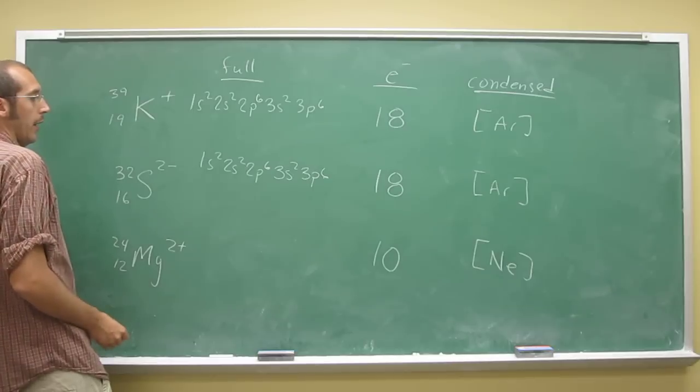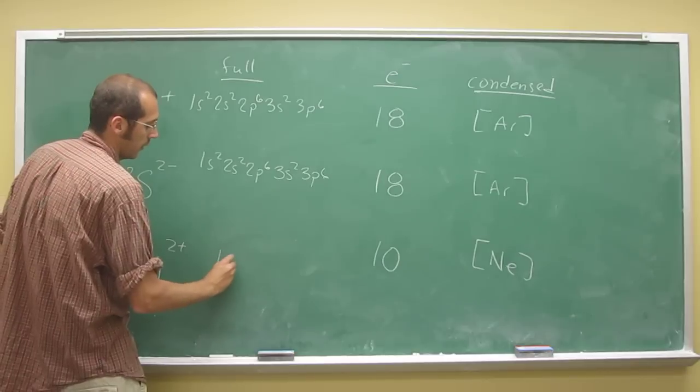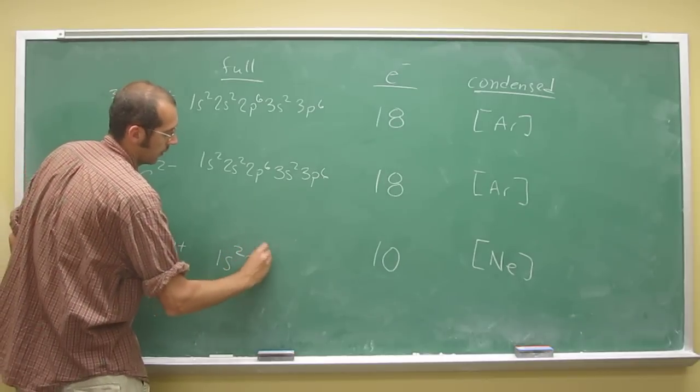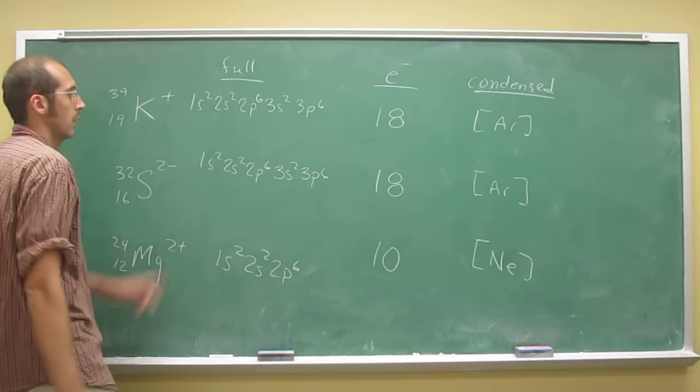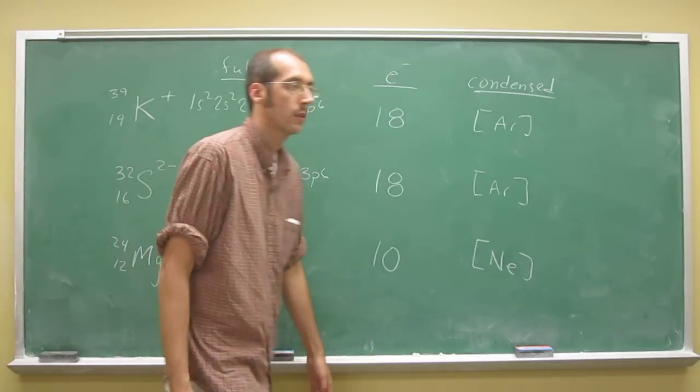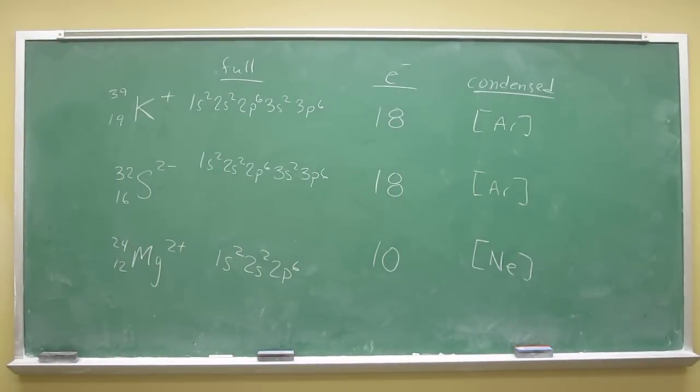And then of course magnesium 2+ is going to be the neon configuration which is 1s2, 2s2, 2p6. 10 electrons, 18 electrons. Okay, cool. Hopefully that makes sense.